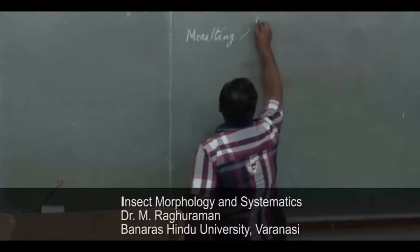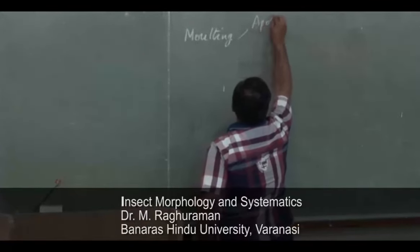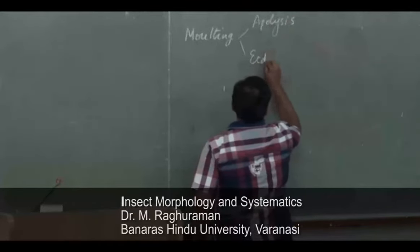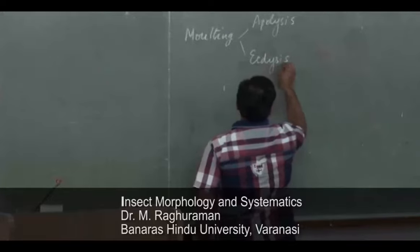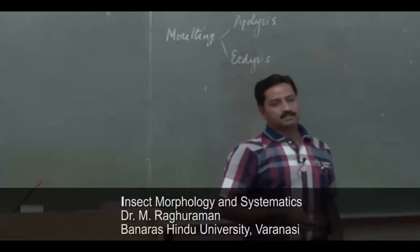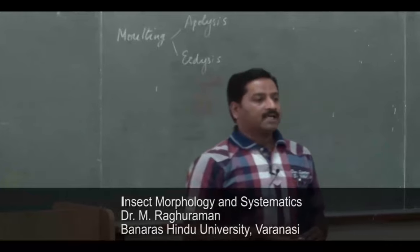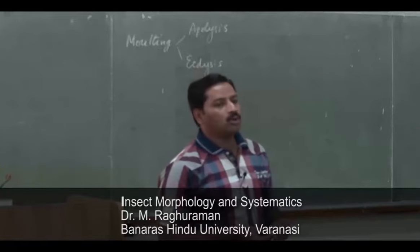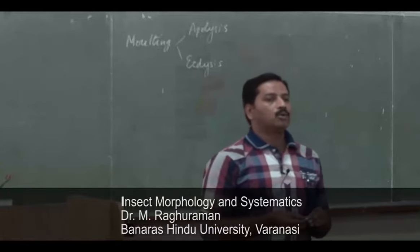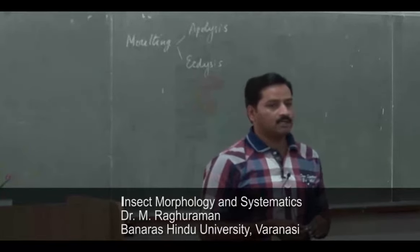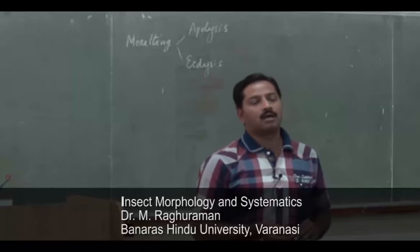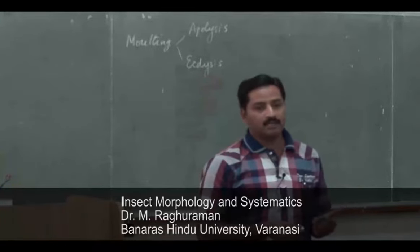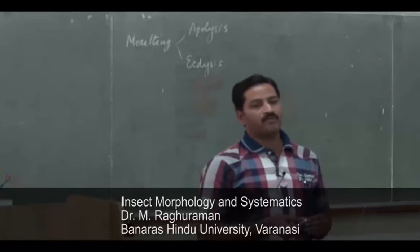Moulting is achieved by apolysis and ecdysis. Insects moult periodically to increase in their size. The younger, immature stages of insects can increase in their size by the process of moulting.